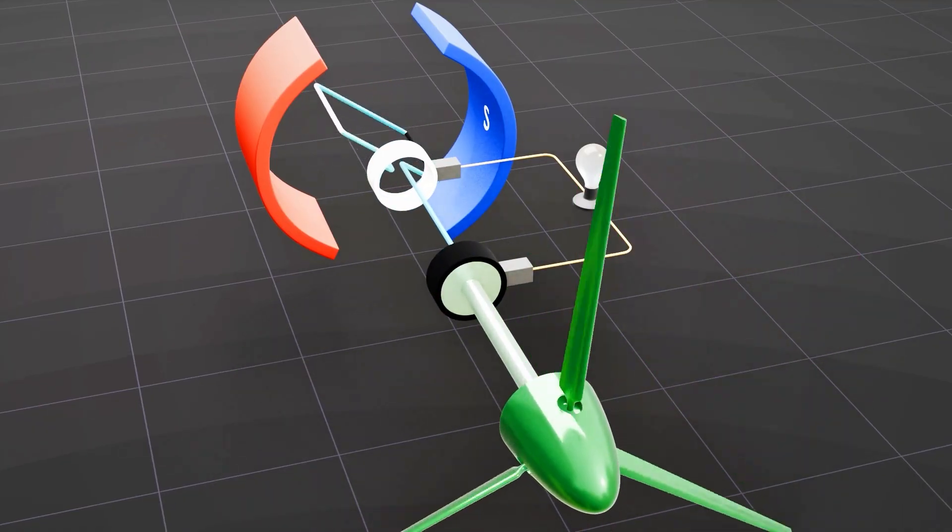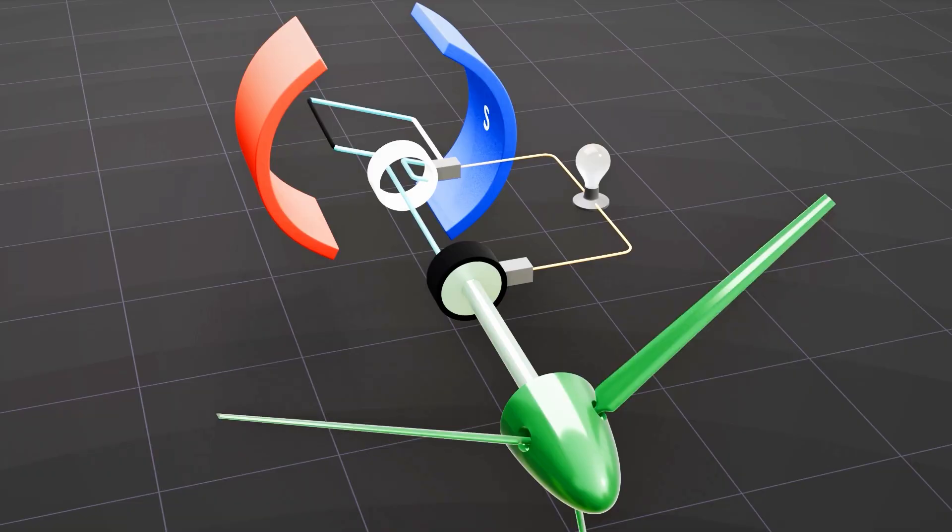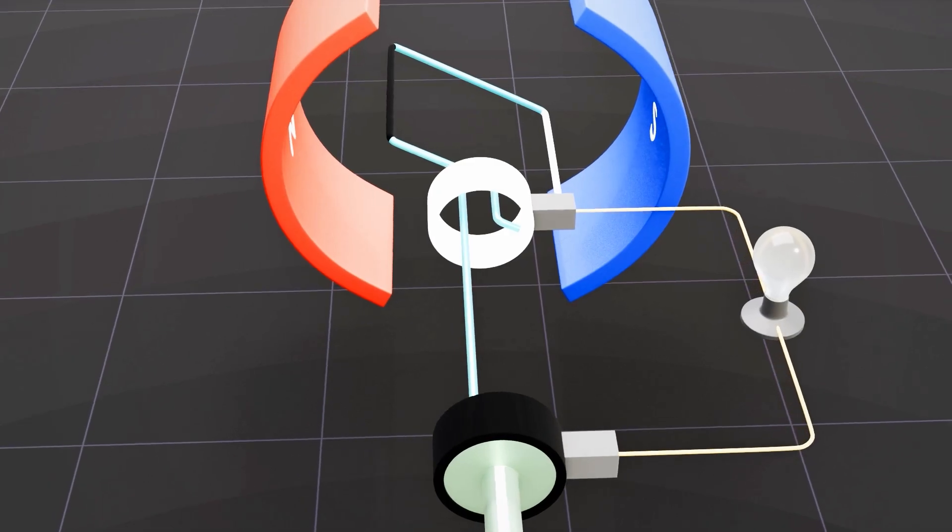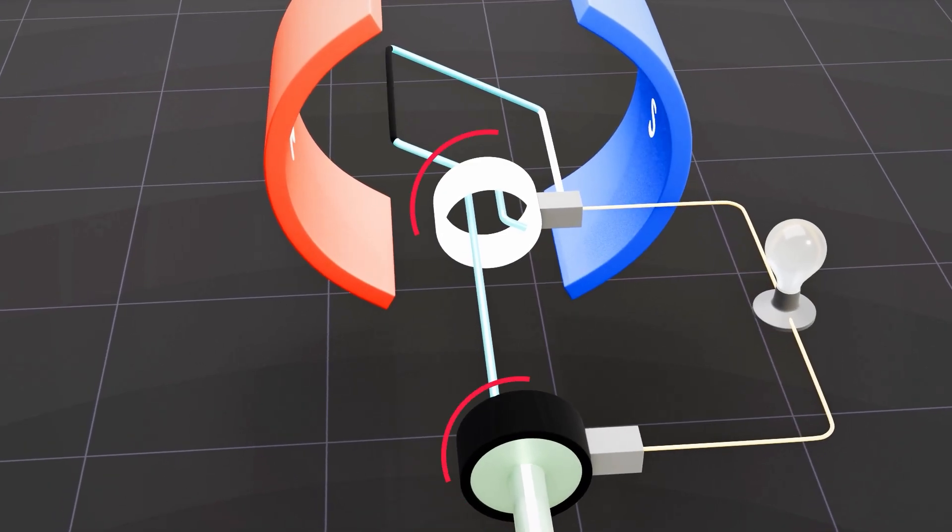Each end of the coil is linked to a separate slip ring that rotates along with the coil. The white side of the coil is connected to the white slip ring, and the black side of the coil is connected to the black slip ring.